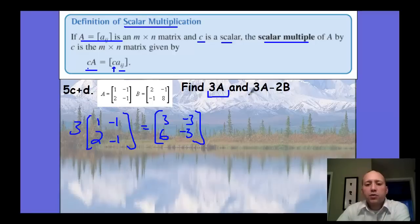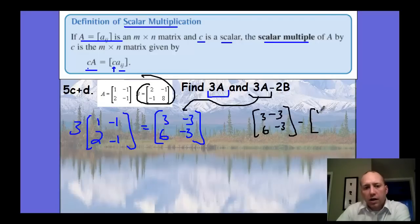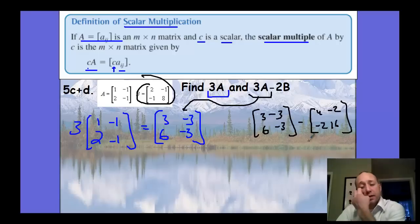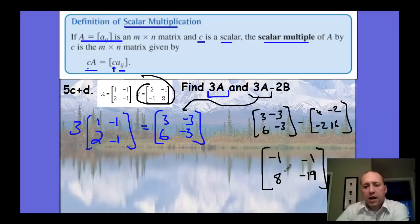For part D, three times A gives [3, -3, 6, -3], and then we subtract two times B. Doubling matrix B gives [4, -2, -2, 16]. Subtracting: three minus four is negative one, negative three minus negative two is negative one, six minus negative two is eight, negative three minus sixteen is negative nineteen. That's the result for 3A minus 2B.